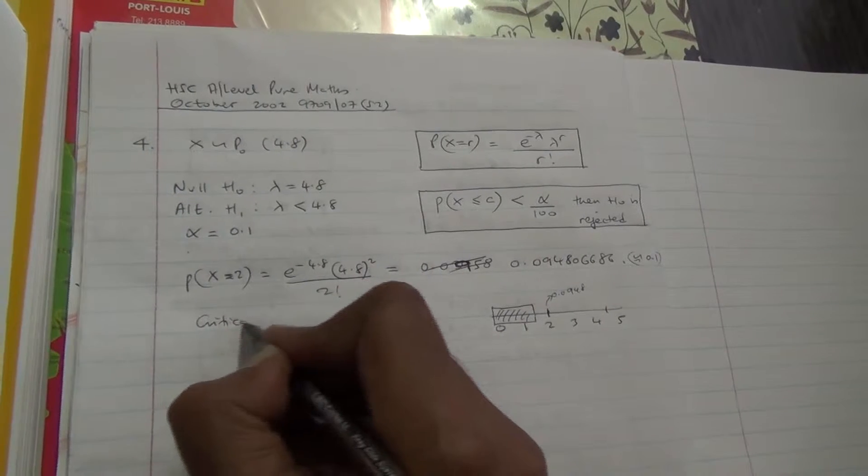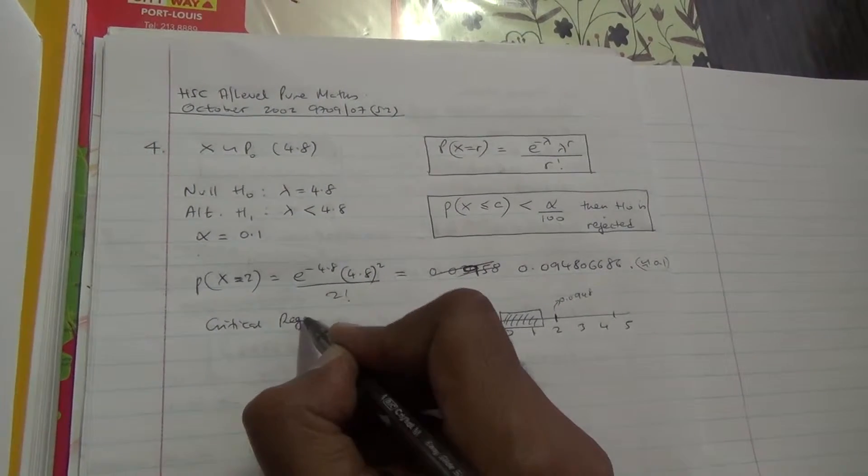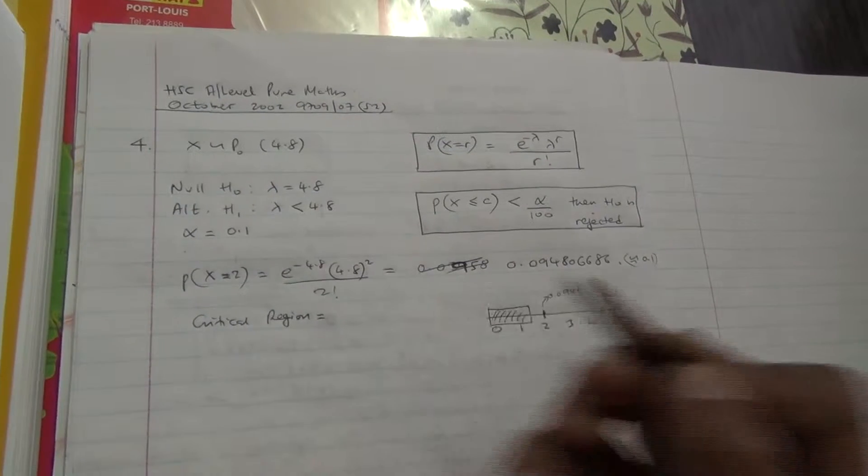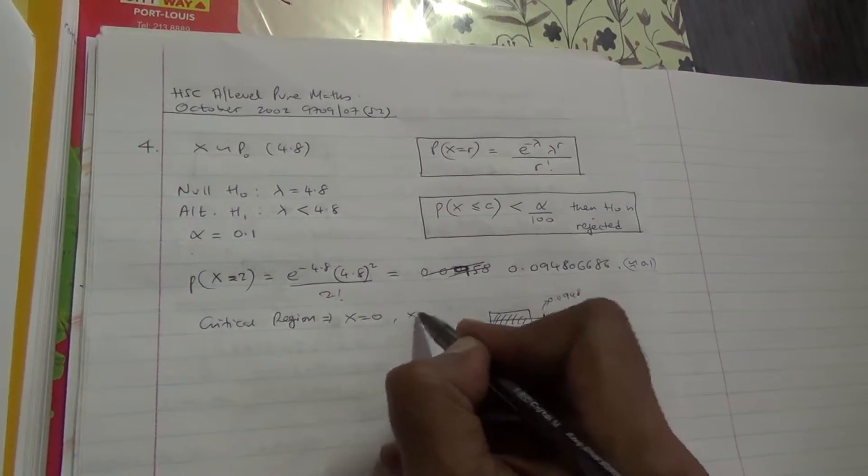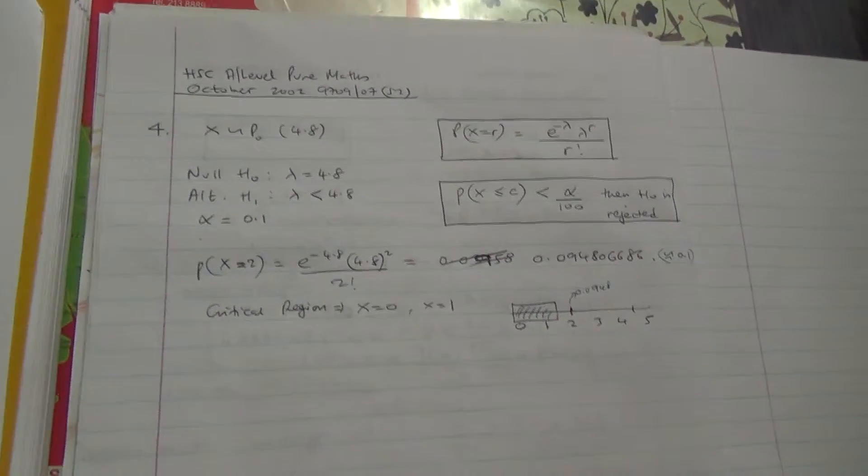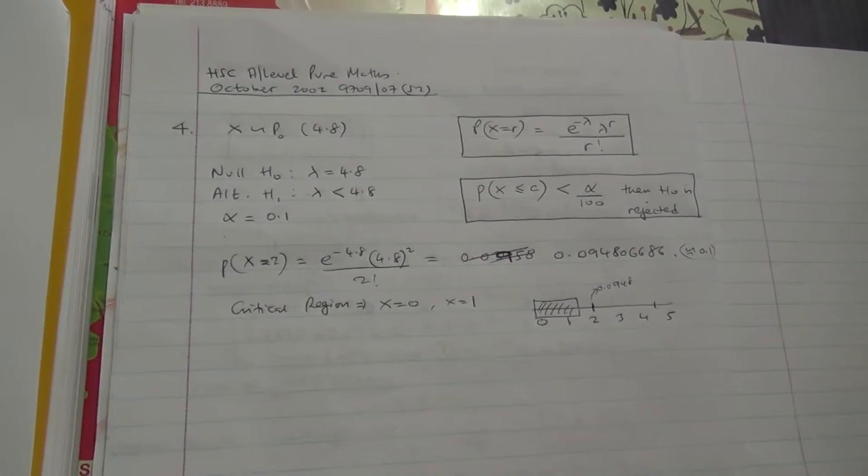So critical region, which is in other words the rejection region, is going to be where X is equal to 0, or X is equal to 1. So that's the first part. And we need to carry out the test.